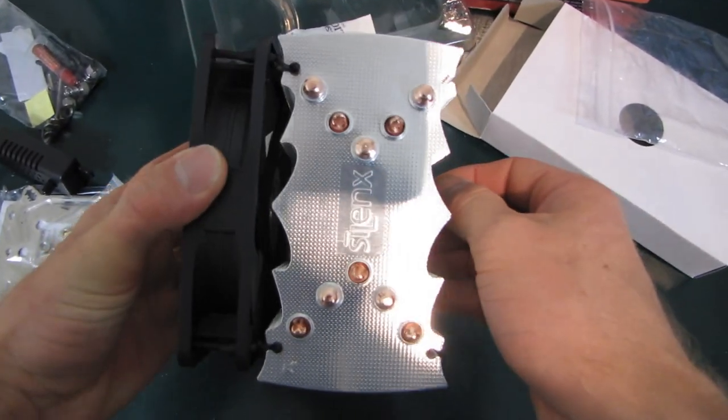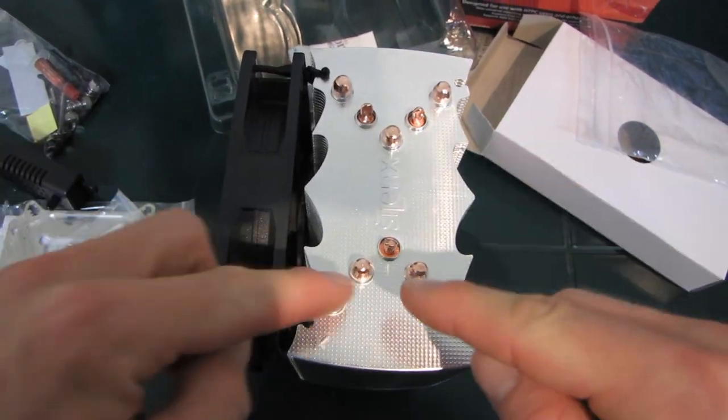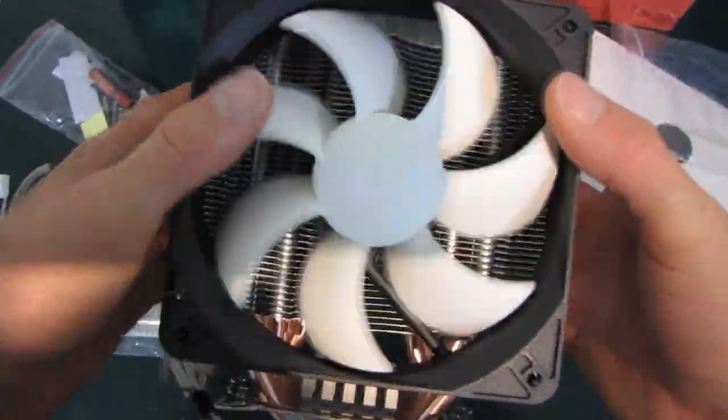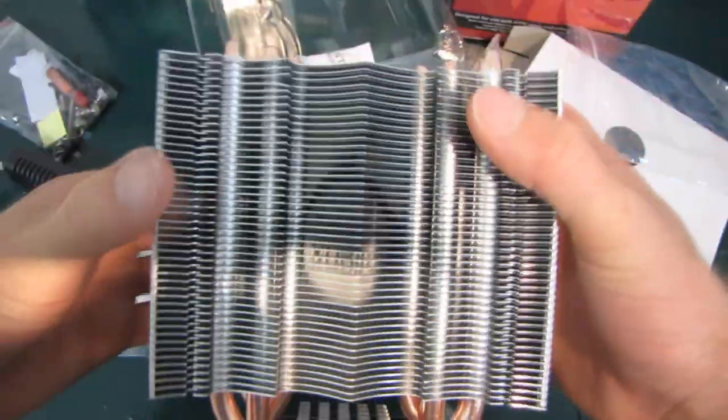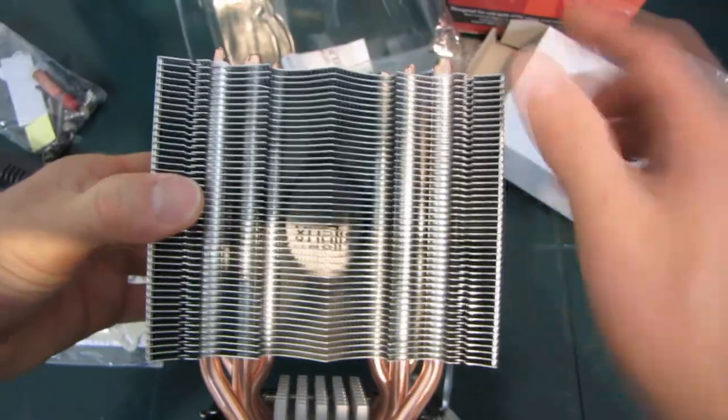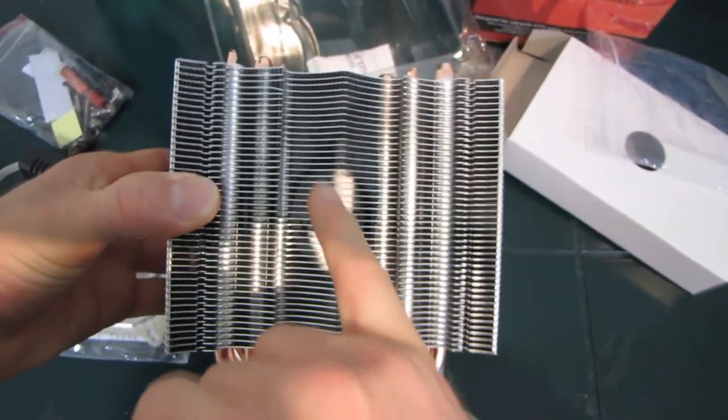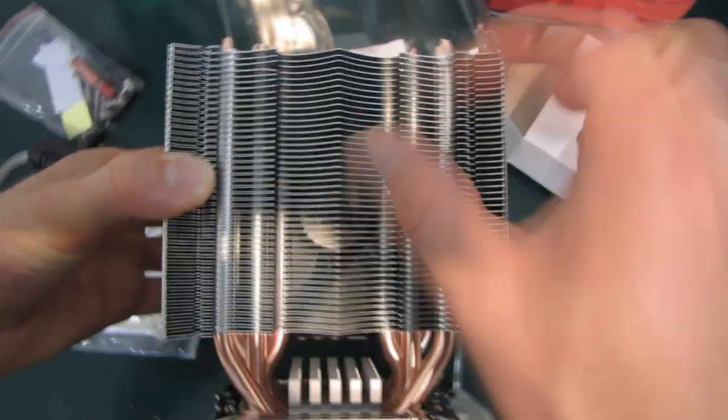This is one thing that I really like about this cooler right off the bat. All of the heat pipes line up with the part of the cooling tower that is going to see the most airflow. You see where the blades of the fan actually start around here. That's where the dead zone is in the middle where there's no airflow because that's where the hub of the fan is.